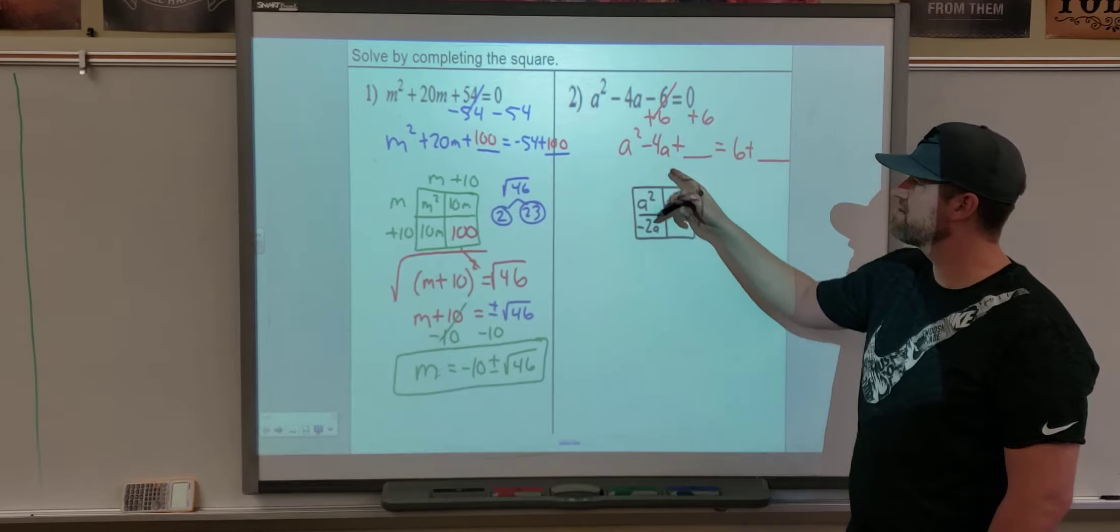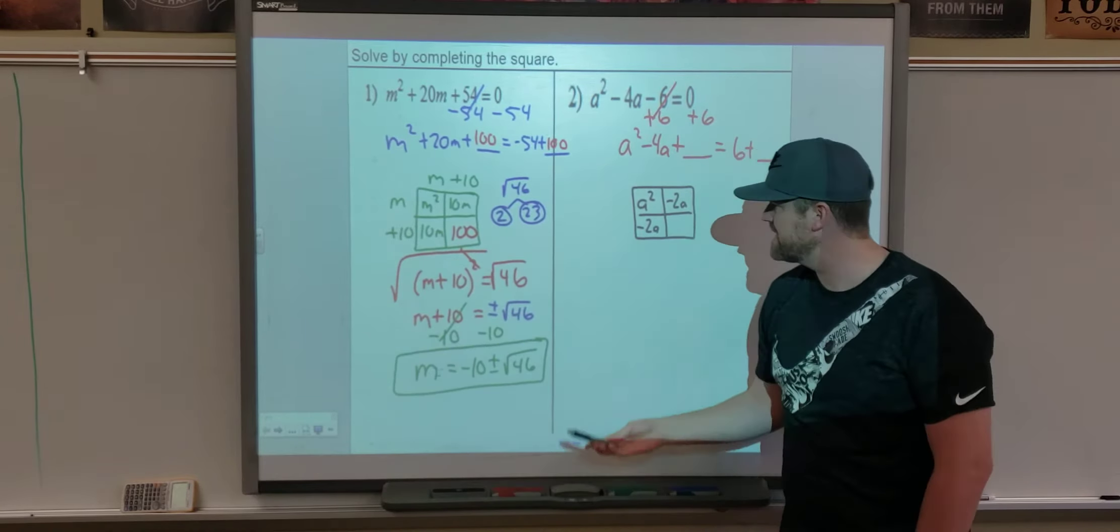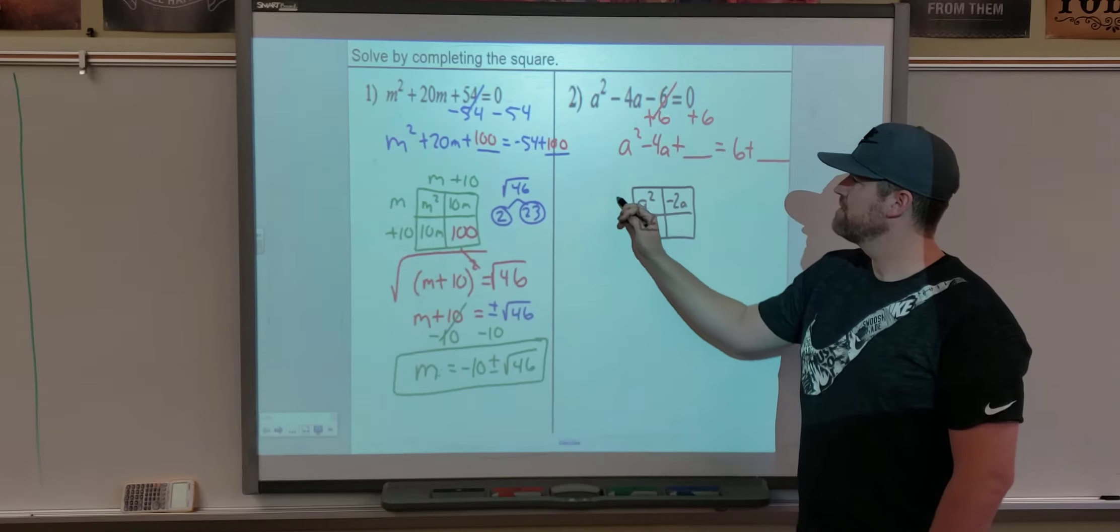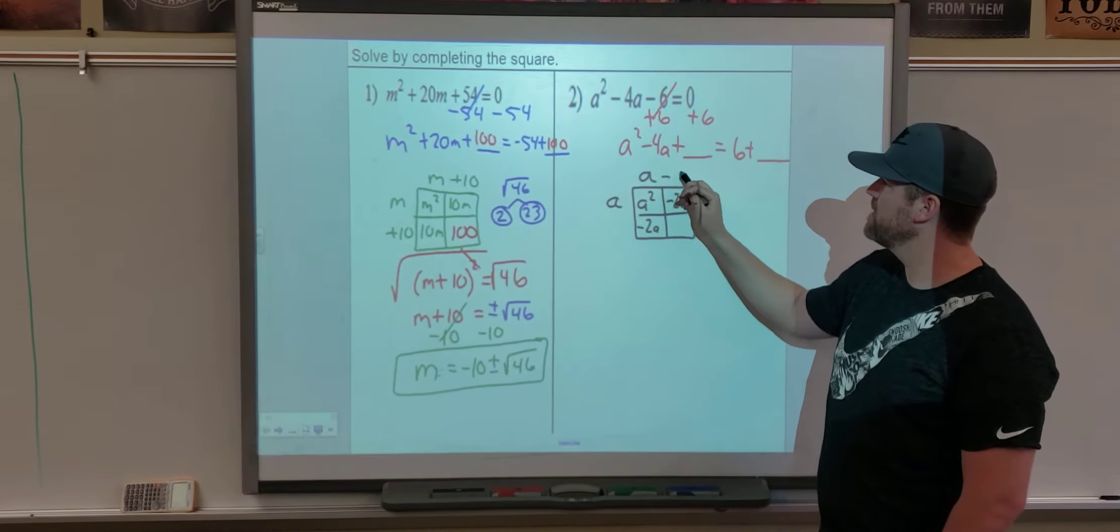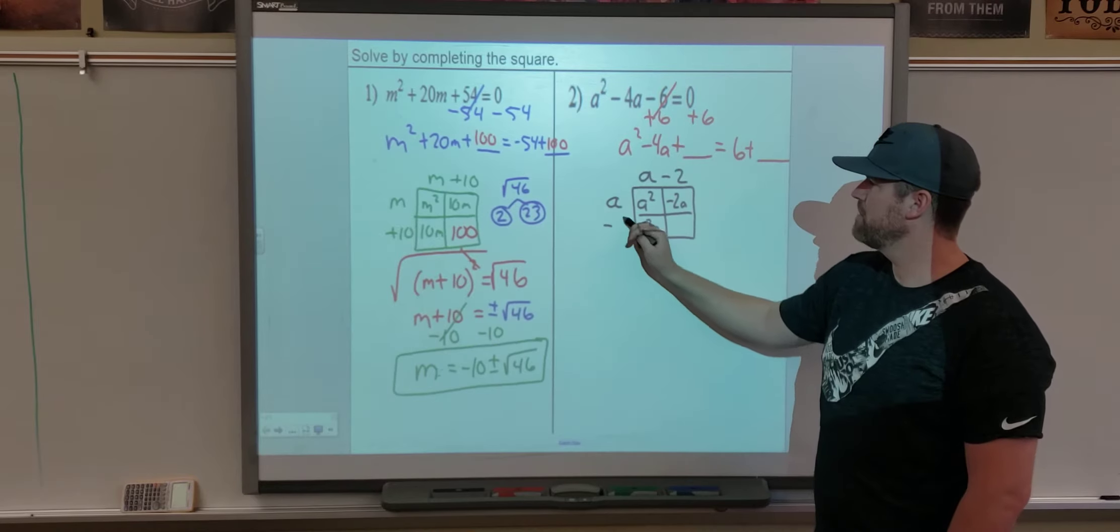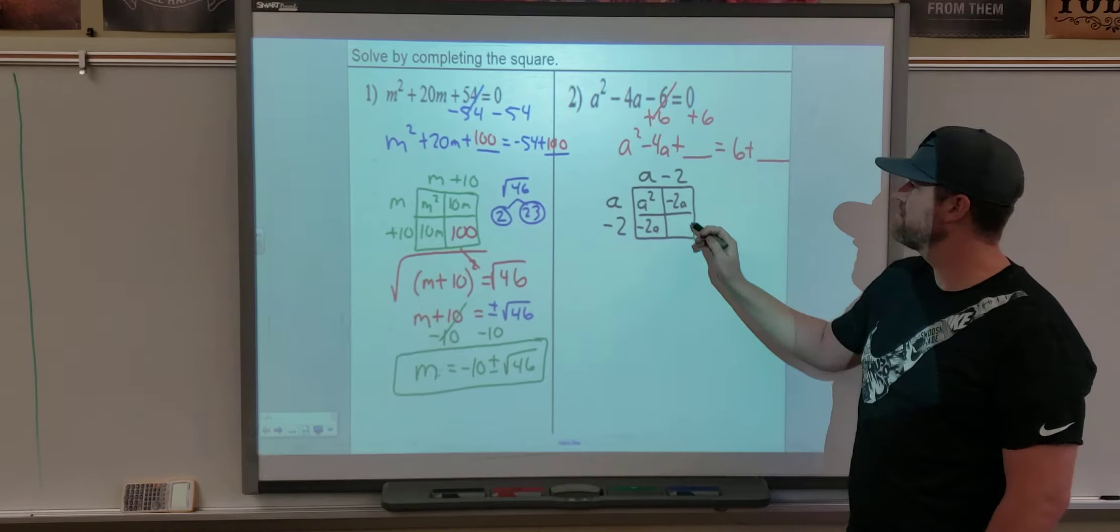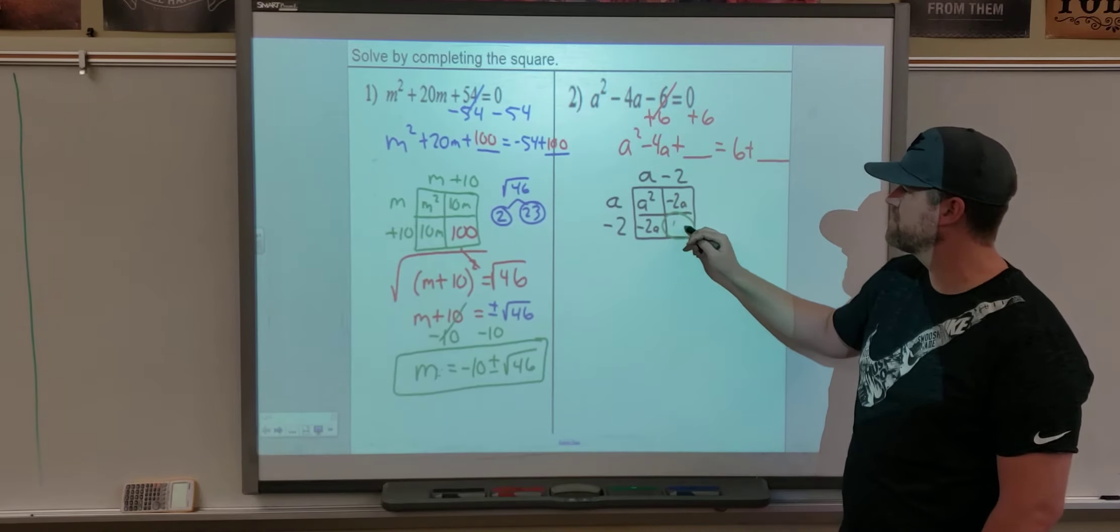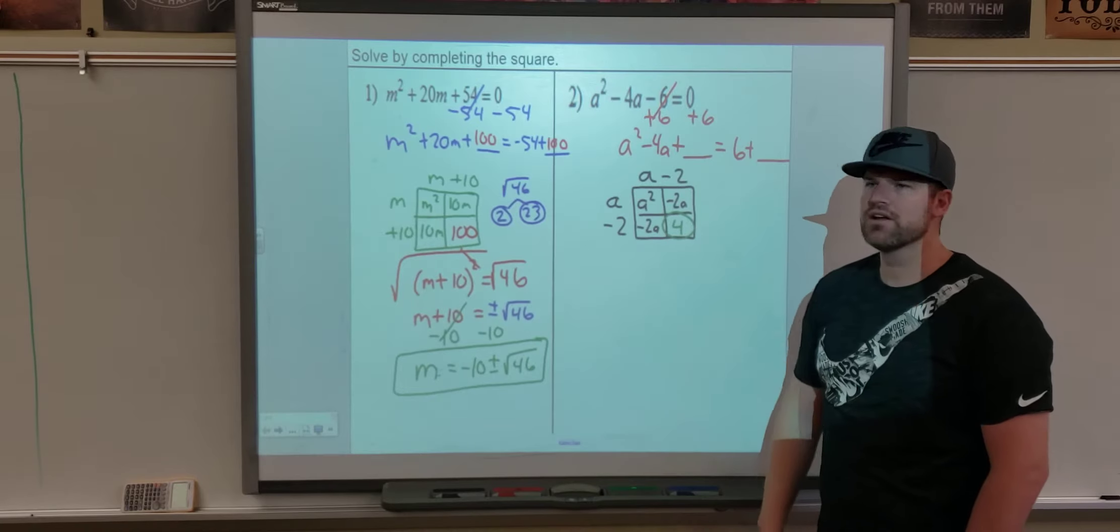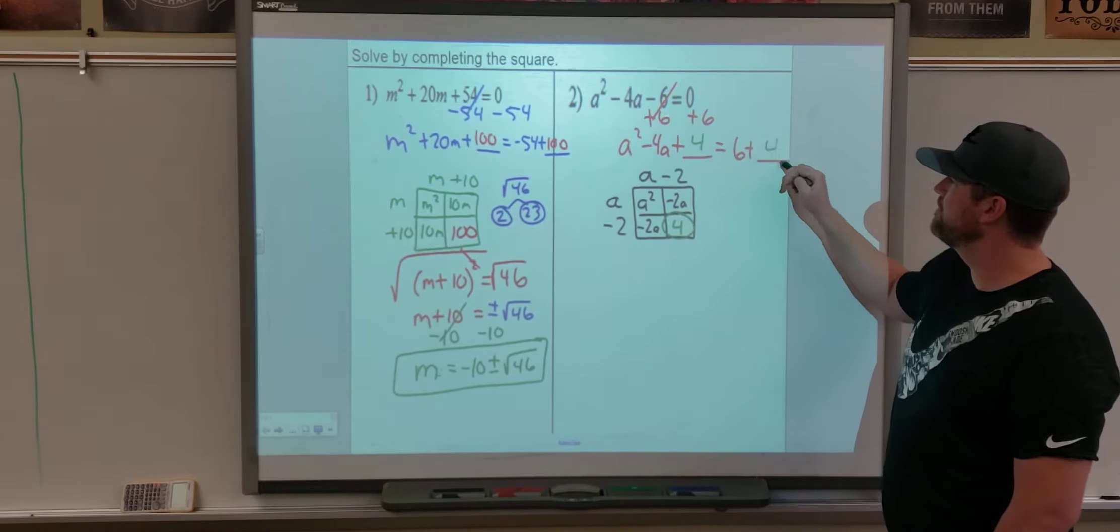That way, these two boxes do add to the negative 4A. And then to find our new C, we're going to factor out the A. That has to be A to get negative 2A. That's minus 2, minus 2. And to fill in our last box, we're going to do negative 2 times negative 2, which is a positive 4. So the new value that gets added to both sides is a positive 4.